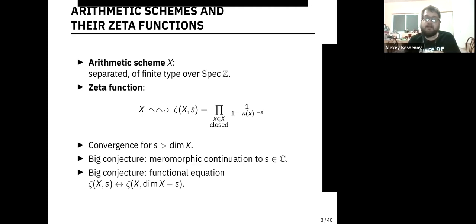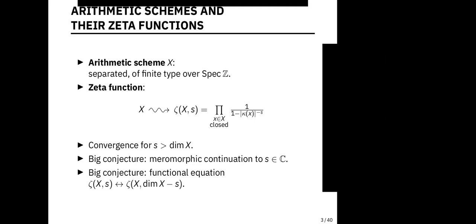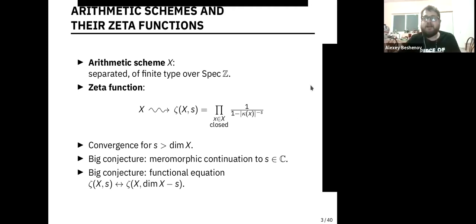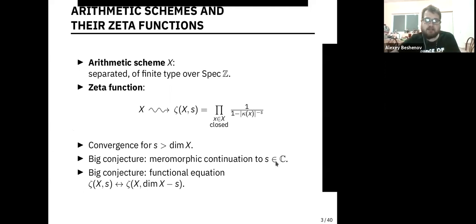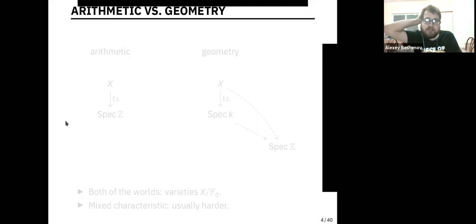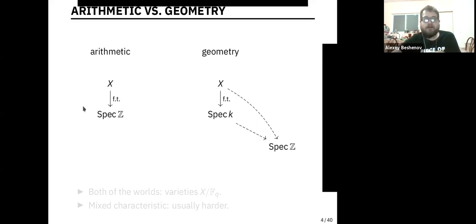So basically, when I'm talking about things of Krull dimension one, you should think about something like spectra of rings of integers or a number field. Already, if I'm talking about an elliptic curve, it's already of dimension two. These are really big conjectures, the existence of a meromorphic continuation and the functional equation. Normally when we talk about arithmetic things, we work with schemes of finite type over Spec Z; when we work with geometry, we talk about schemes of finite type over a field. Varieties over finite fields are a more approachable example of these arithmetic schemes because they somehow live in both worlds — they are arithmetic schemes, but at the same time they are varieties.